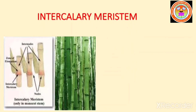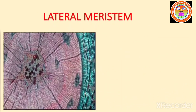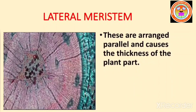Intercalary meristem lies between the region of permanent tissue and is part of the primary meristem. It is found either at the base of a leaf — for example, Pinus — or at the base of an internode — for example, grasses. Lateral meristems are arranged parallel and cause an increase in the thickness of the plant part.